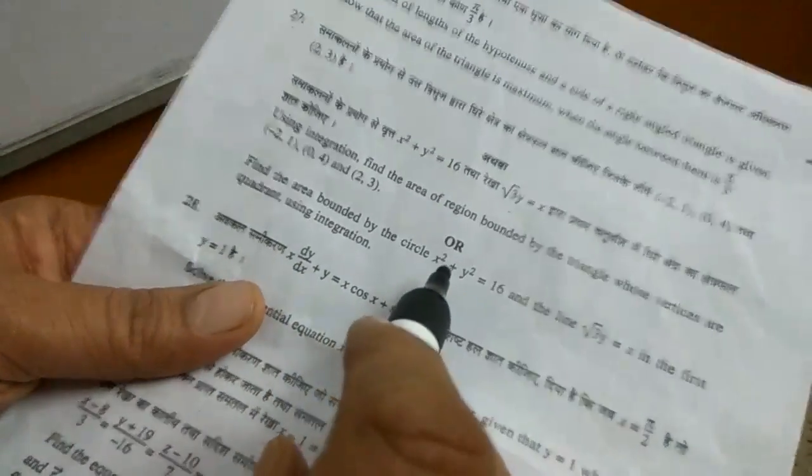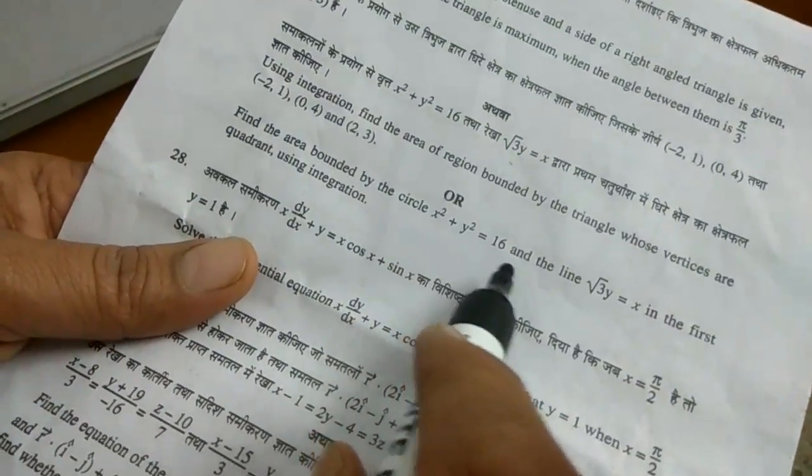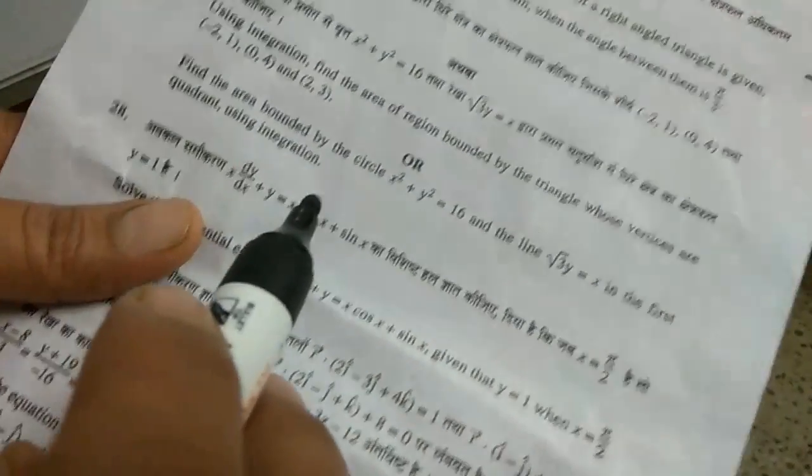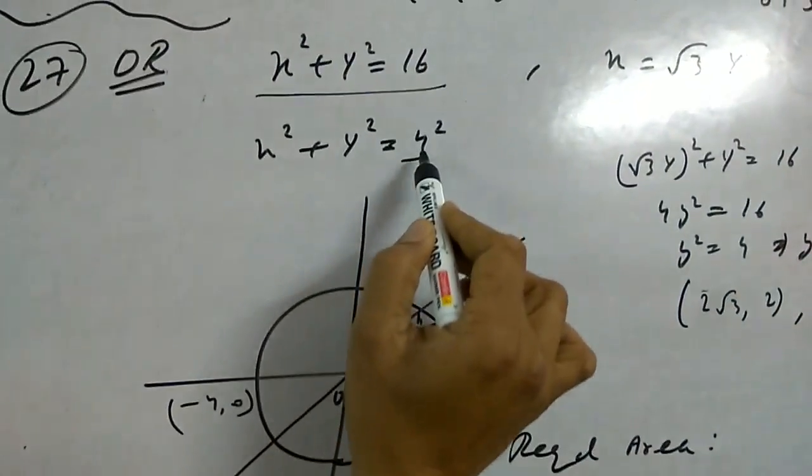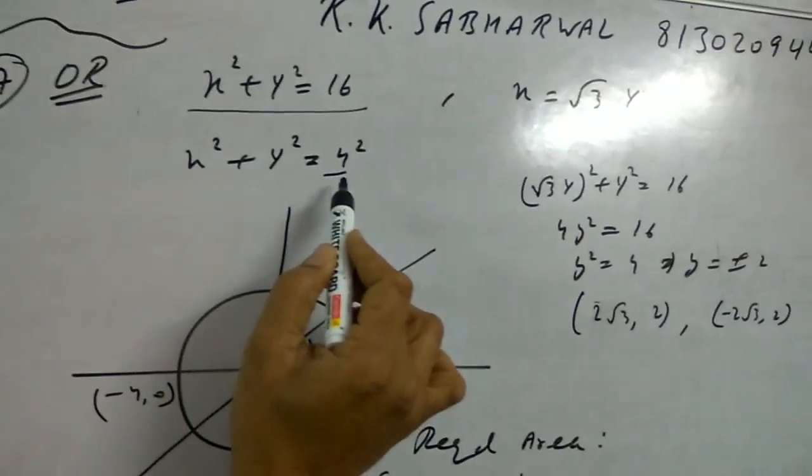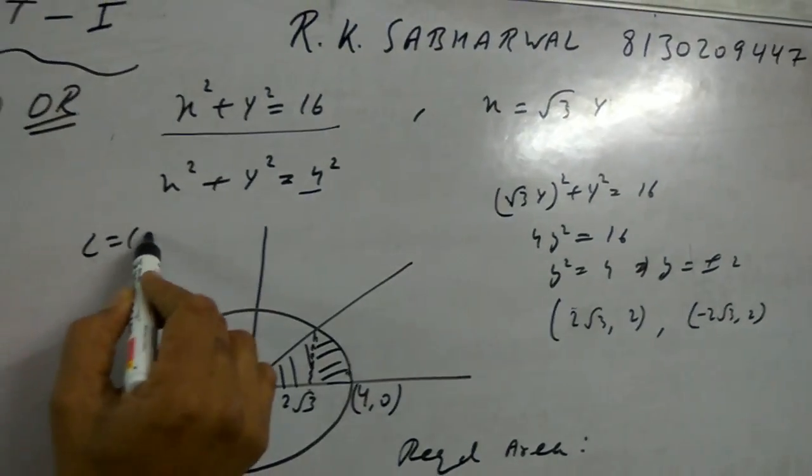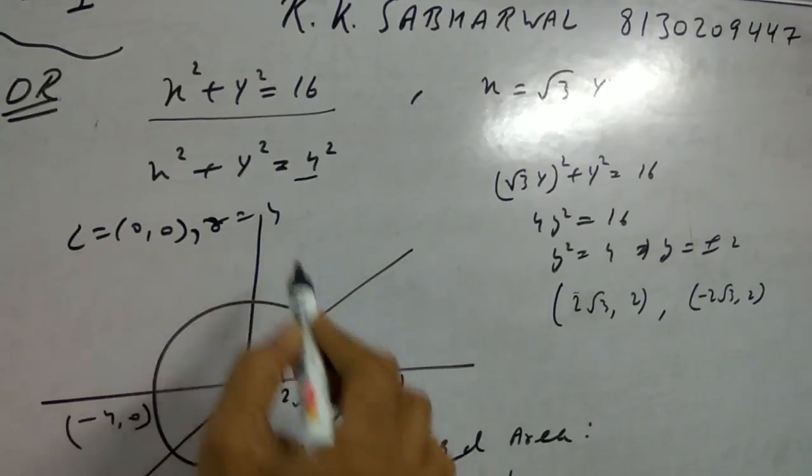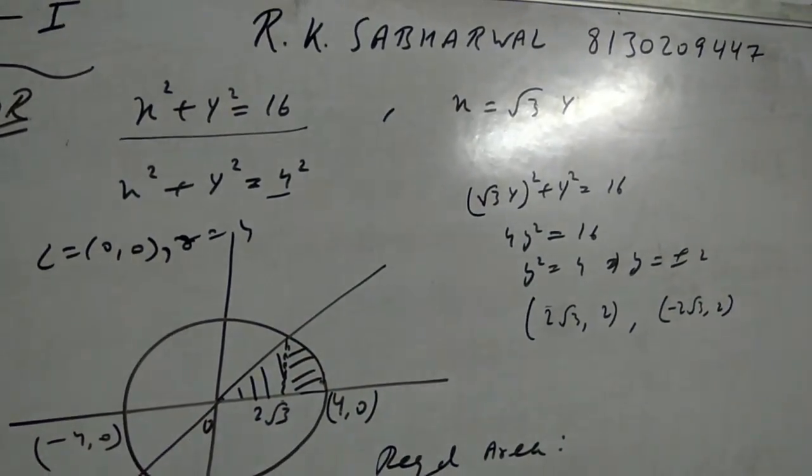Find the area bounded by the circle x square plus y square equals 16 and line x equals root 3y in the first quadrant using integration. There are two equations: x square plus y square equals 16 means the circle has center 0, 0 and radius 4. The circle is made with radius 4 and center 0, 0.